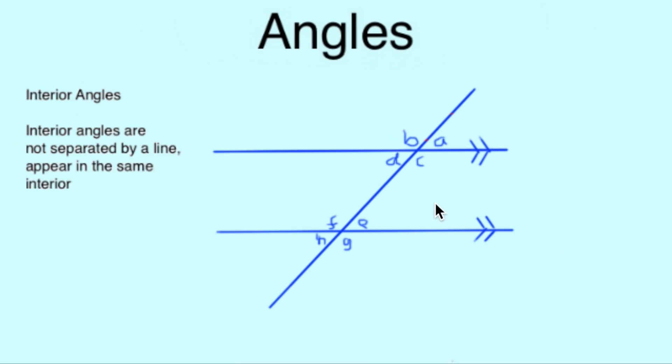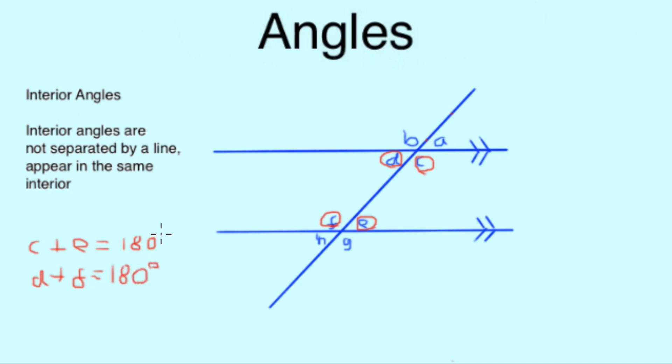Interior angles are those that are not separated by any lines. For example, we can see here that D and F and C and E appear on the same interior shape. These angles will also add up to 180 degrees. Any two examples of angles that add together to make 180 degrees are known as supplementary angles.